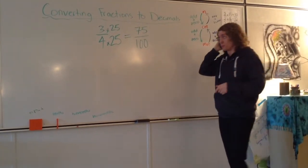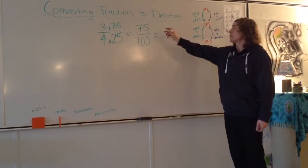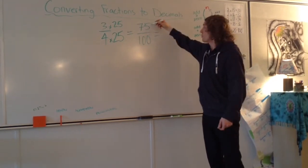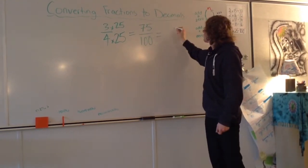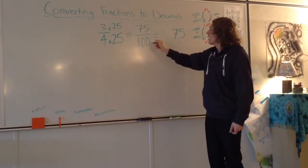Because you take the 7 and the 5, the 7 is in the tens spot, the 5 is actually in the hundreds spot. So the 7 goes there, the 5 goes there.